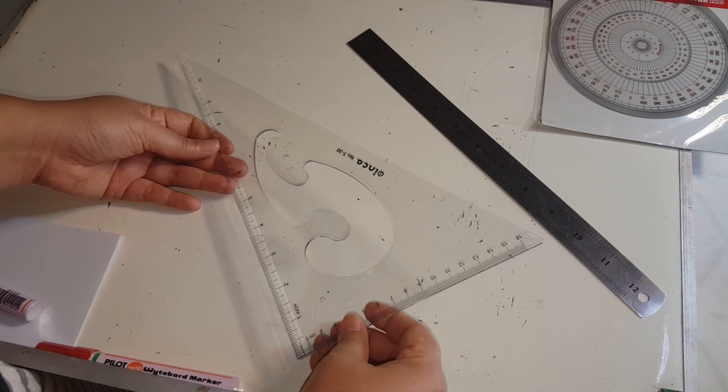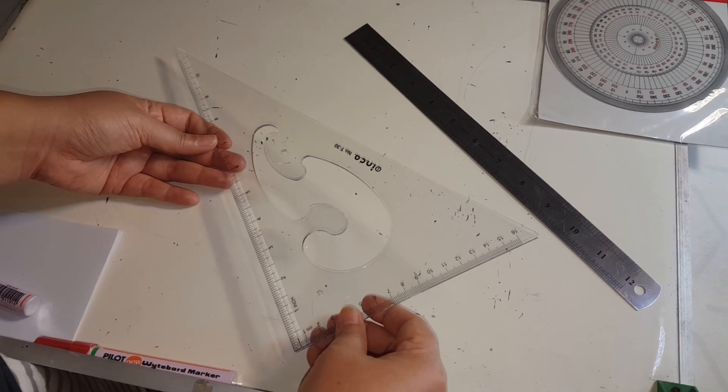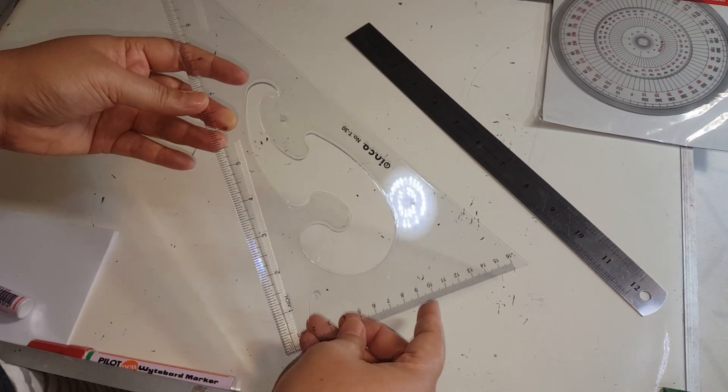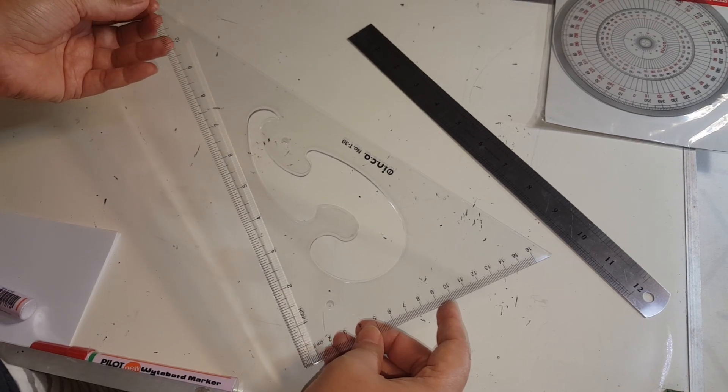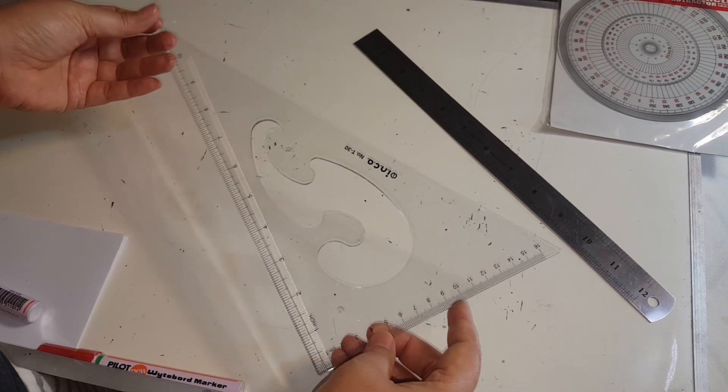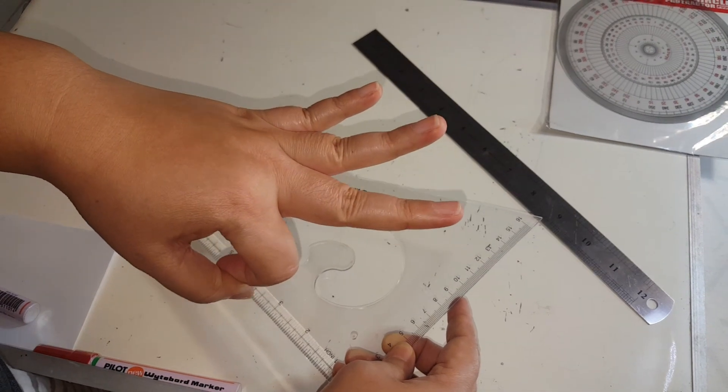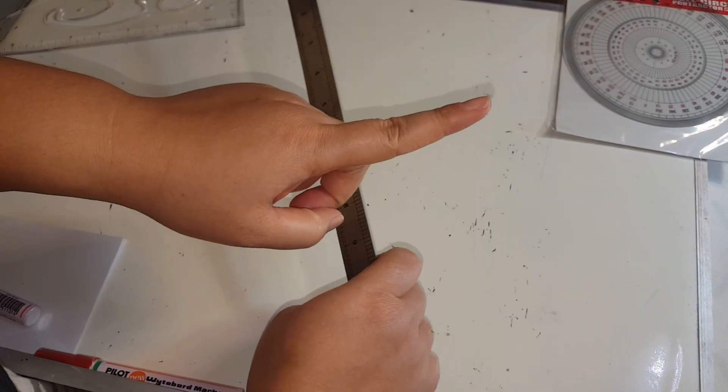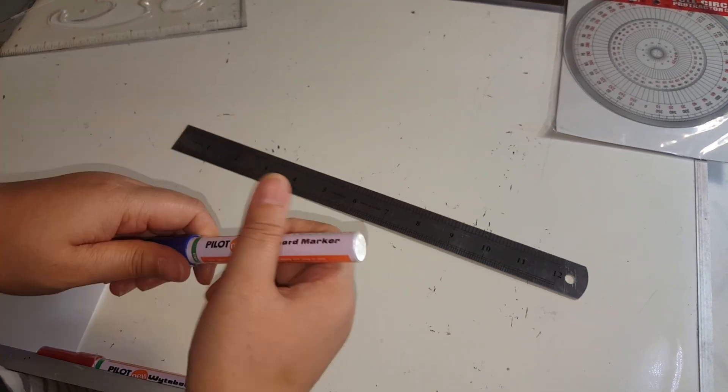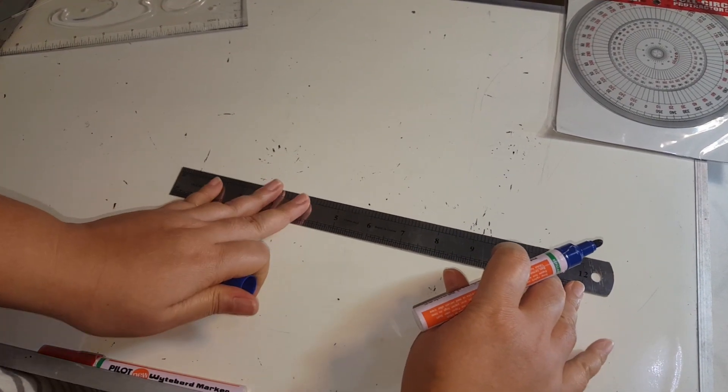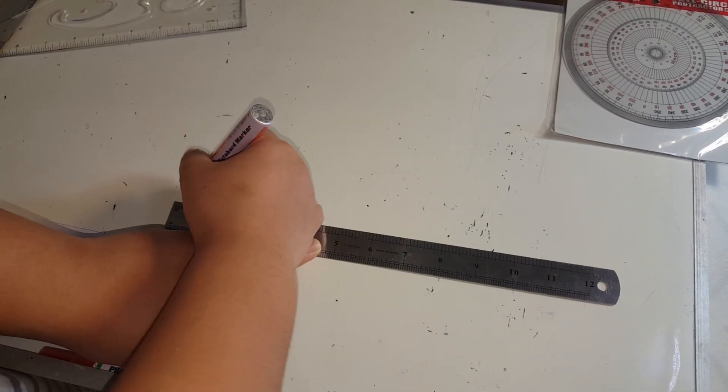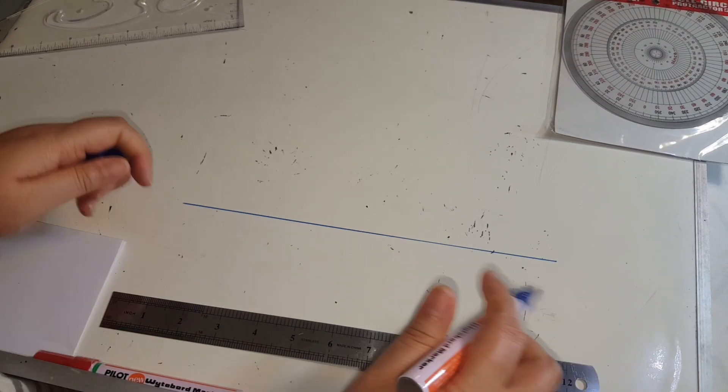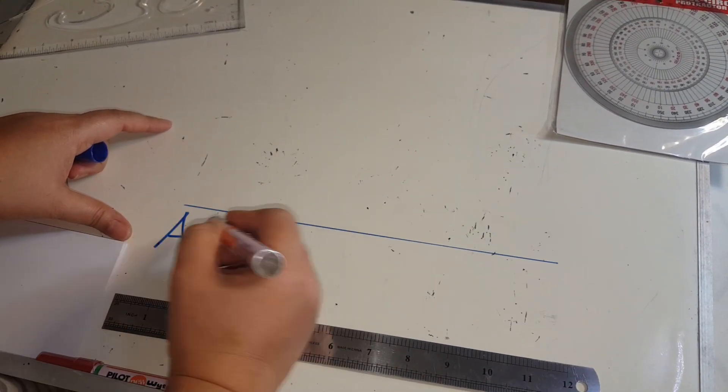At this point, I will be teaching you how to draw perpendicular lines using a ruler and a set square. A set square is a special instrument used to draw perpendicular lines. There are only three steps. Step number one. We draw a line. I will name this line, line AB.